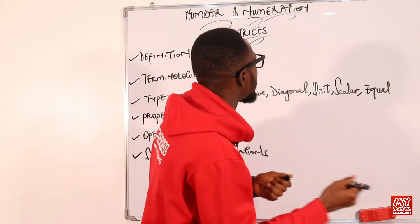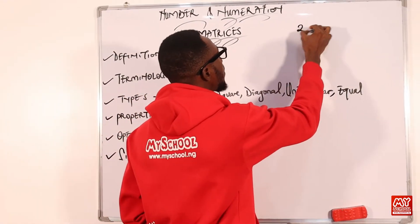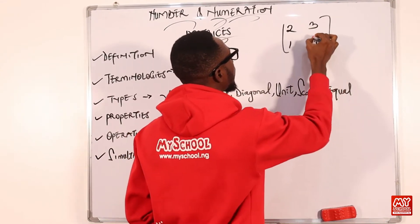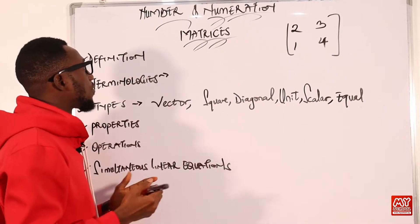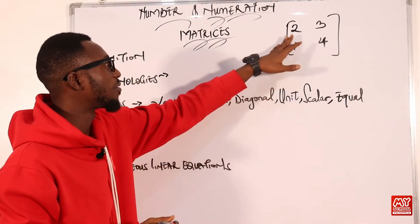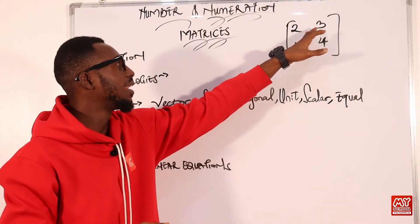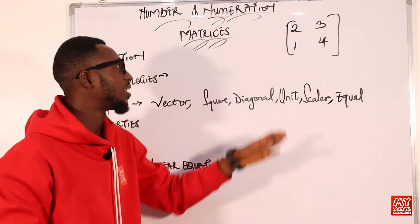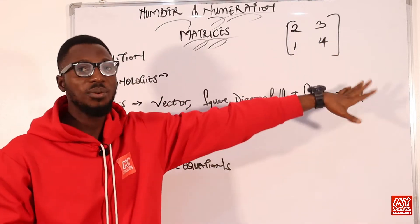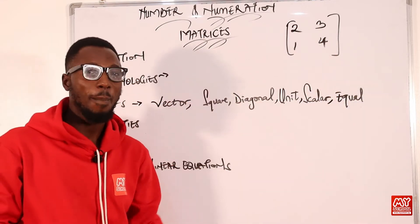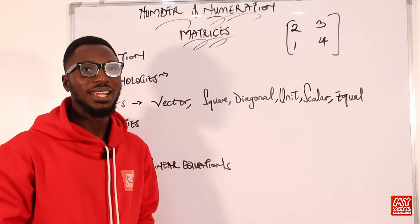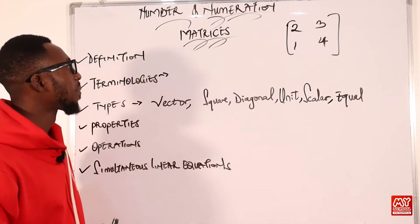A matrix is enclosed in box brackets. What I've just described can be seen here — we have numbers, which you can refer to as elements or entries, and you can see that they are arranged in a rectangular array or pattern. It's quite rectangular, looking like a square, and of course it is enclosed within box brackets.